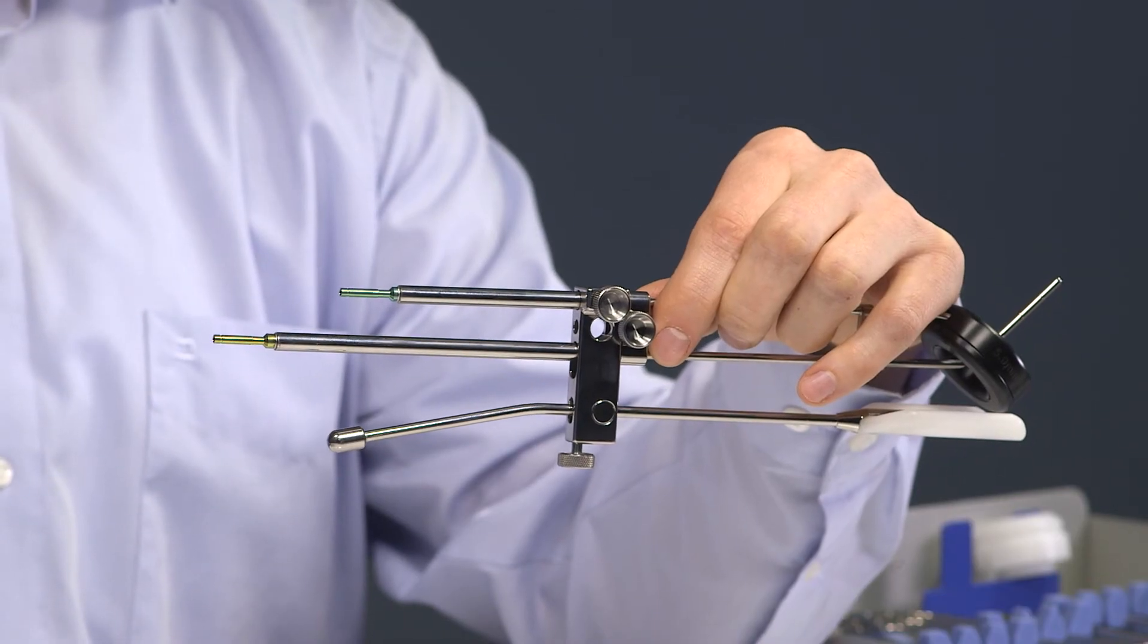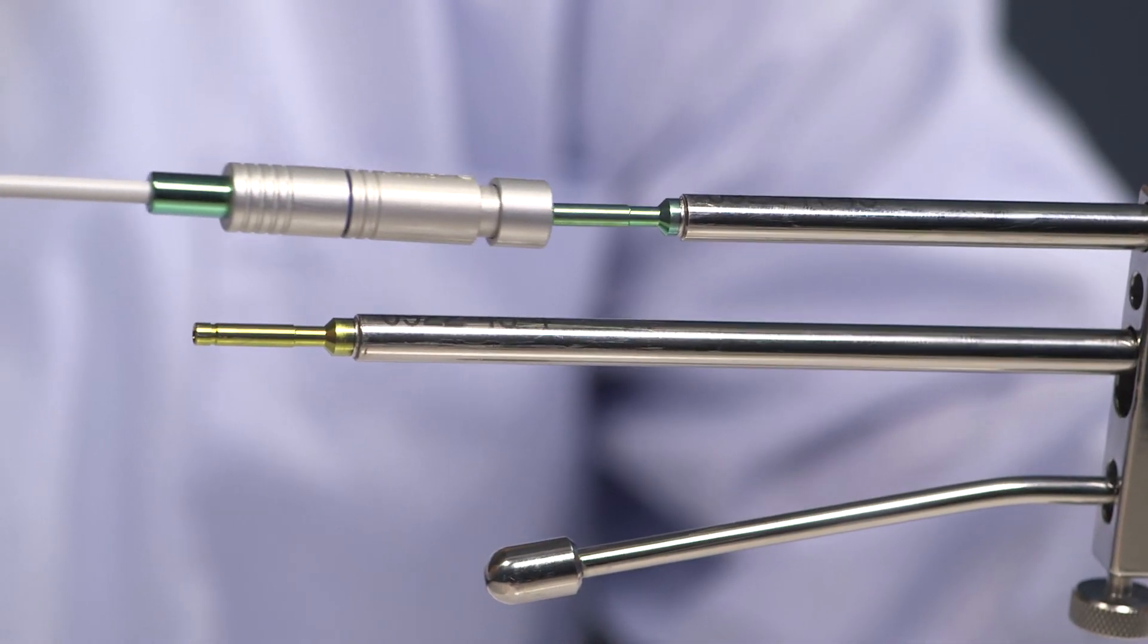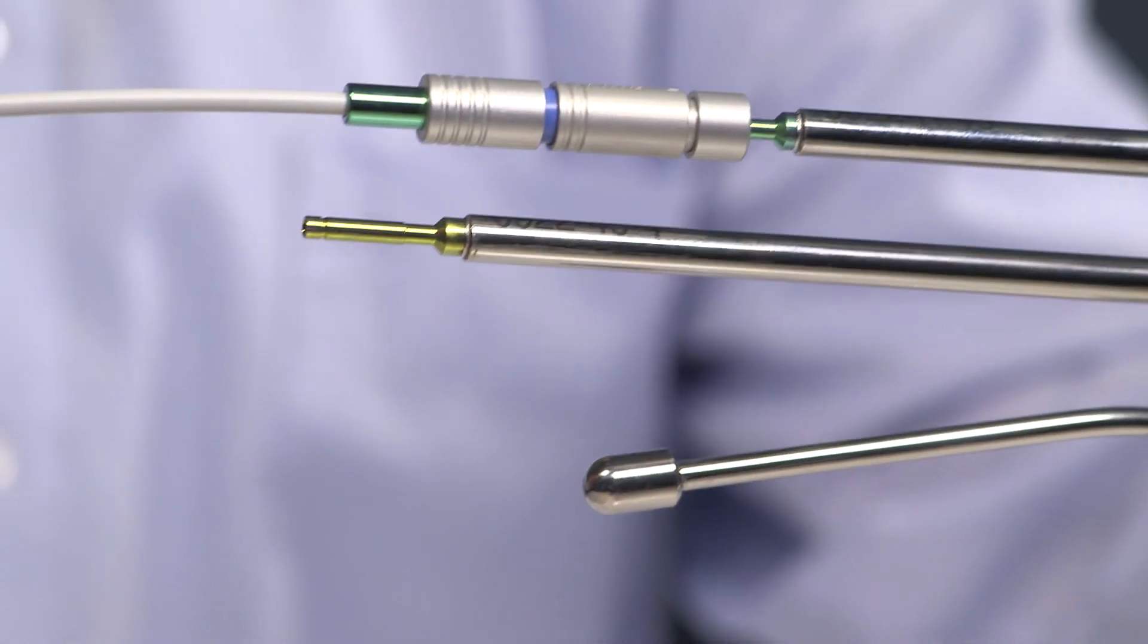In order to start the treatment, transfer tubes are needed. Eckert & Ziegler-BEBIG provides color-coded transfer tubes that are connected like this.